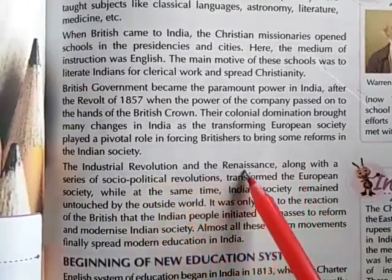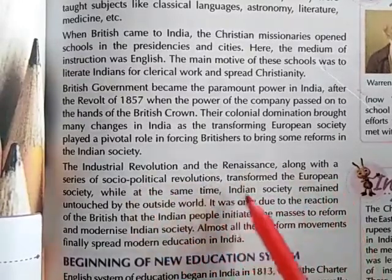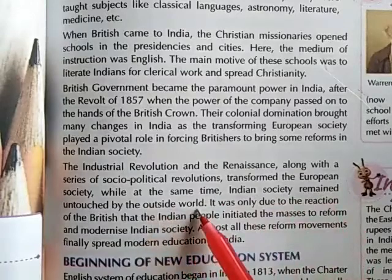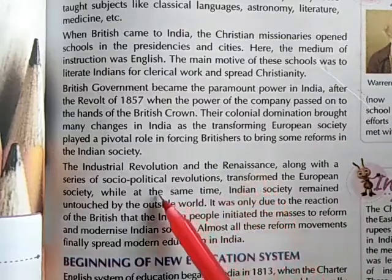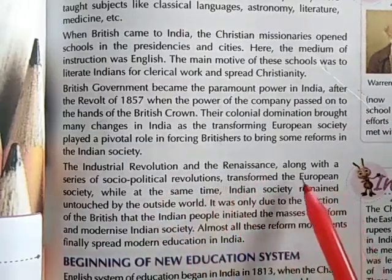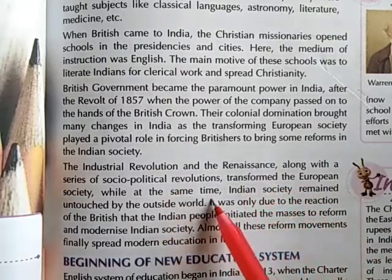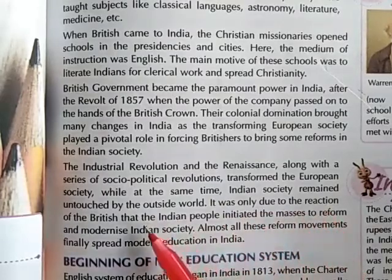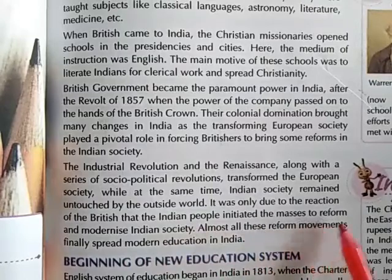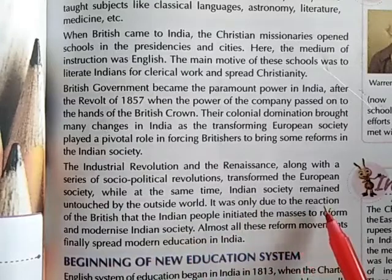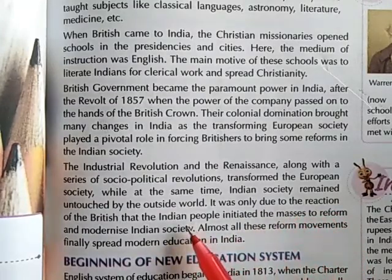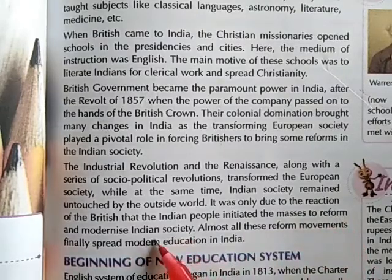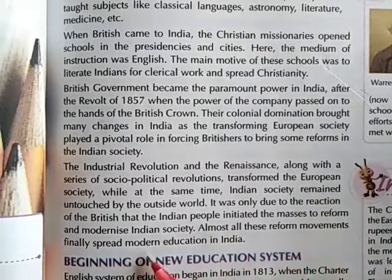The Industrial Revolution and the Renaissance, along with a series of socio-political revolutions, transformed the European society, while at the same time Indian society remained untouched by the outside world. It was due to the reaction of the British that the Indian people initiated the masses to reform and modernize Indian society. Almost all these reform movements finally spread modern education in India.